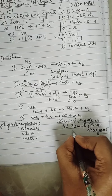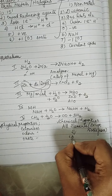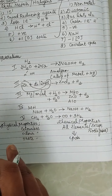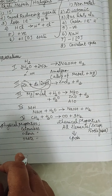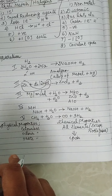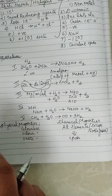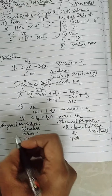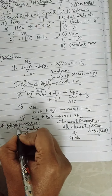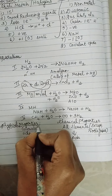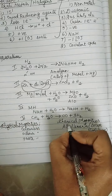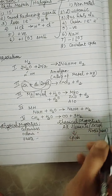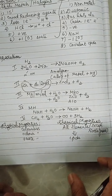Hydrogen has the ability to react with all the elements in the periodic table except noble gases. It will not react with noble gases, but it can react with all other elements, and as a result it can form compounds.